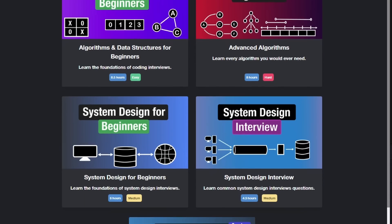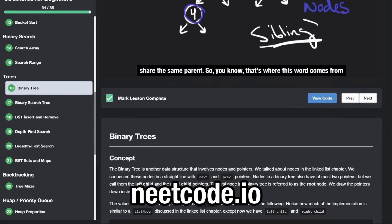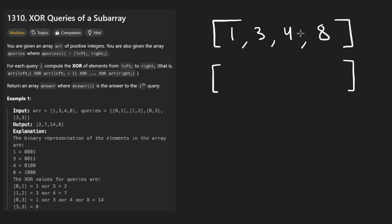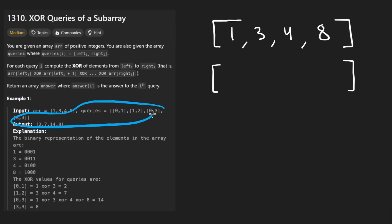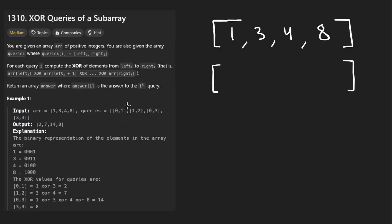Hey everyone, welcome back. Let's write some more neat code today — XOR queries of a subarray. We're given an input array and an array of queries. For each query, for example zero to one, we go through positions from index zero to one, XOR all of the values, and add the result to some output array.